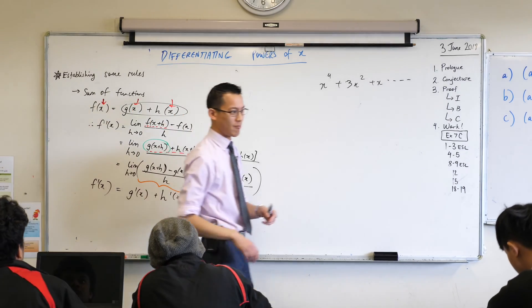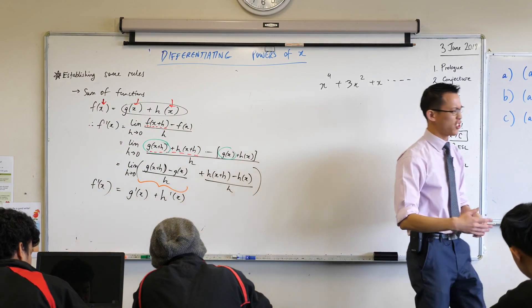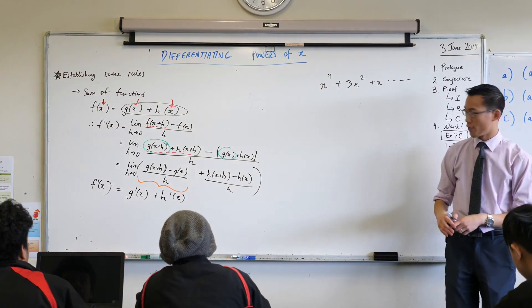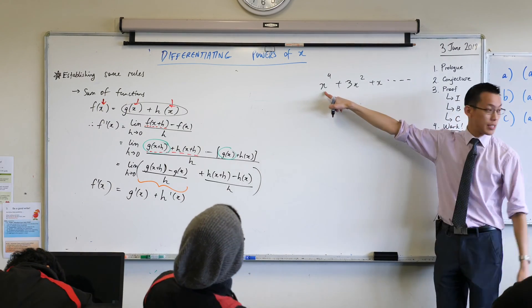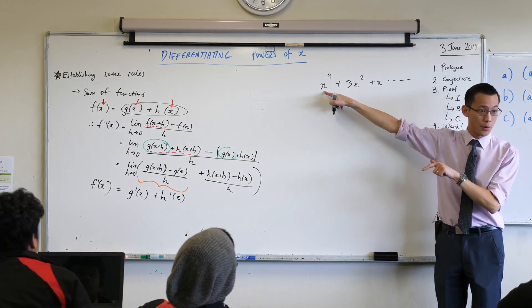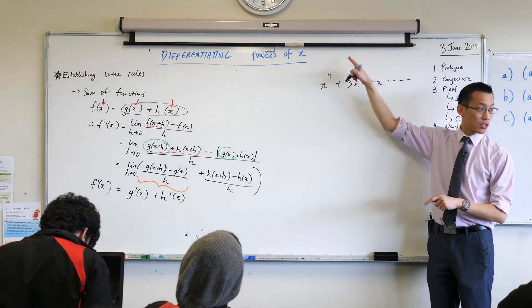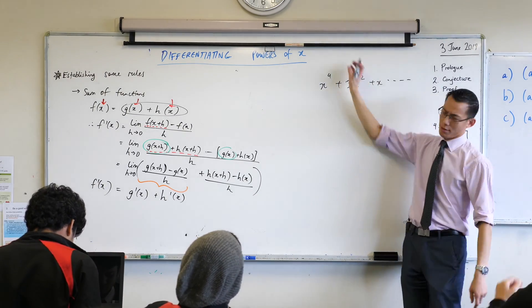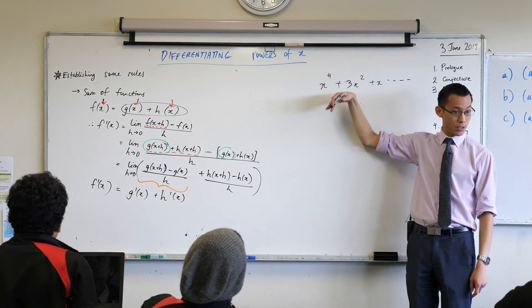Alright, now another thing that we were saying, and we didn't really explain it but we said yeah you can just do it, is when there's a number out the front, right? You know how we could deal with x to the 4? What's the derivative of x to the 4? 4x to the power of 3. So you're just like, coefficient comes out the front, power reduces, okay?